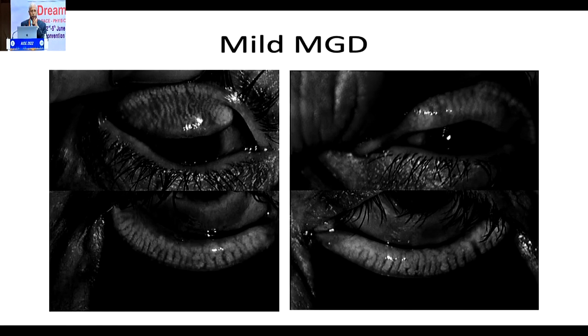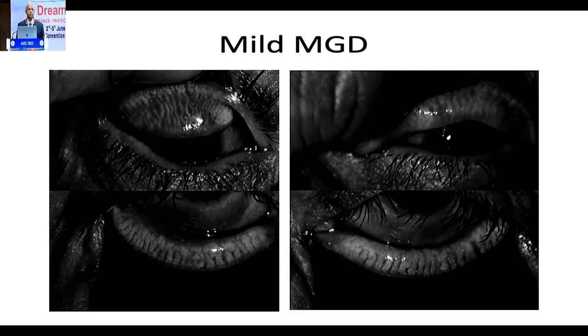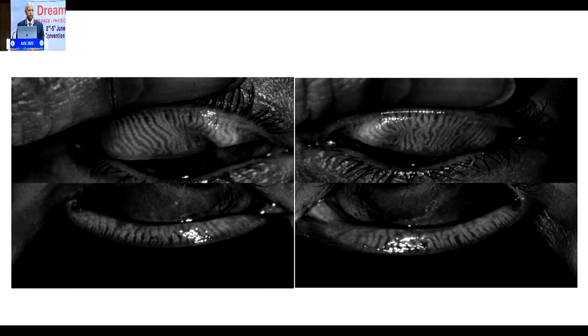How do you look at MGD? Everyone is doing meibography — that's just one tool. Structure and function need not be absolutely aligned. You could have somebody with poor structure but excellent function and vice versa. Nothing beats simply doing a TBUT, or just sitting the patient on a keratometer, switching it on, and seeing the mires — seeing how long the mires stay undistorted before the patient blinks. That itself gives a very important clue. Meibography gives you one more piece of evidence and also allows you to show the patient what is wrong with their meibomian glands.